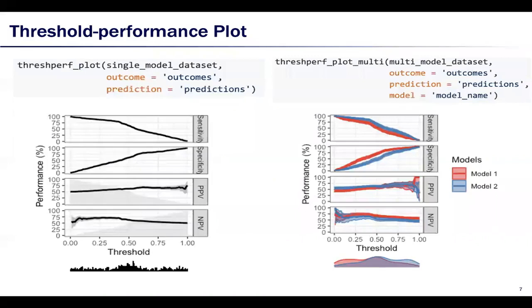It is simple to run our code and make a threshold performance plot by calling ThresholdPerformancePlot or ThresholdPerformancePlotMulti. Users just need to specify the true outcome column and the prediction column. If necessary, specify the column storing the model names.